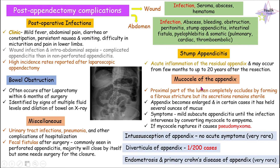Let's move on to the mucocele of the appendix. Mucocele of the appendix usually occurs when the proximal part of the lumen of the appendix occludes due to a formation of a fibrous stricture, which is also caused by appendectomy. The secretions produced by this residual part of the appendix remain sterile but get accumulated inside the stump and it starts being enlarged, sometimes holding several ounces of mucus. Symptoms include mild subacute appendicitis, and if an infection occurs into these sterile secretions it can turn into an empyema. This mucocele can also rupture and cause pseudomyxoma peritonei.